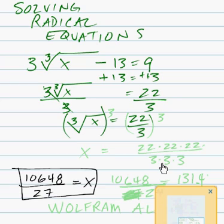Now we're going to raise all of this to the power of 3. And that will give us x equals 22 times 22 times 22 over 3 times 3 times 3.